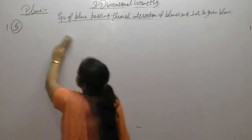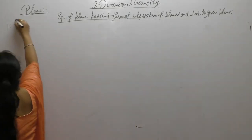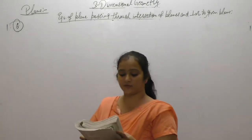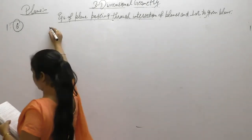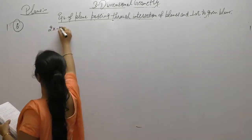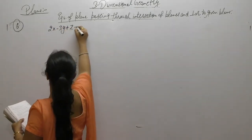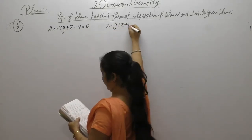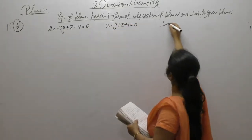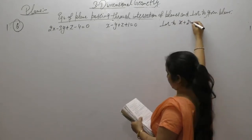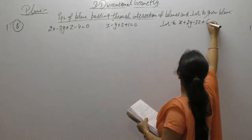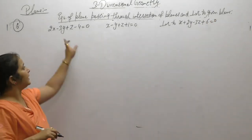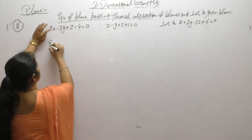Now the next question: Find the equation of the plane passing through the intersection of the planes 2x − 3y + z − 4 = 0 and x − y + z + 1 = 0, and perpendicular to the plane x + 2y − 3z + 6 = 0.